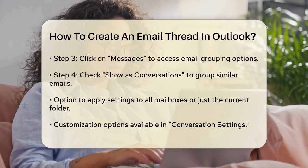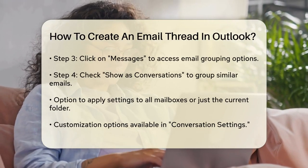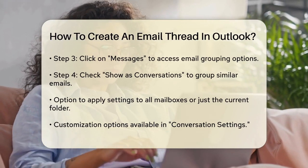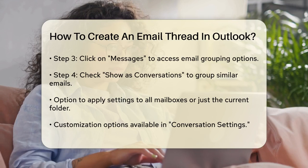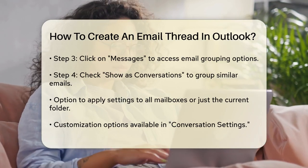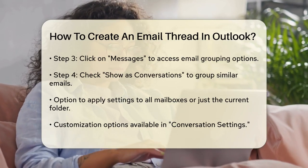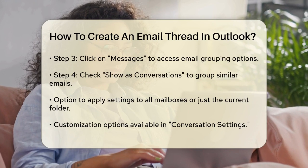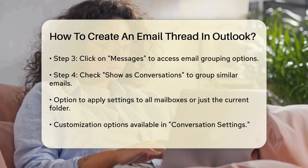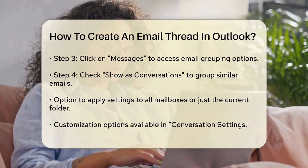Next, you need to check the Show as Conversations option. This will group all your emails with similar subject lines into a single thread. You can apply this setting to all your mailboxes or just the current folder, depending on your preference.